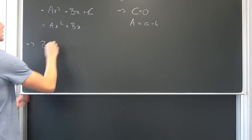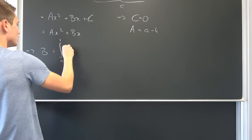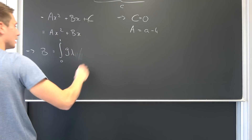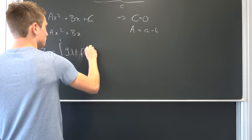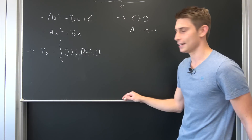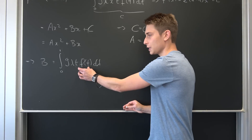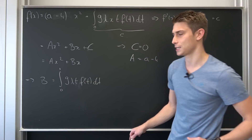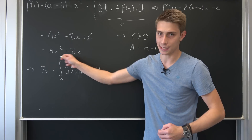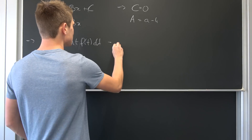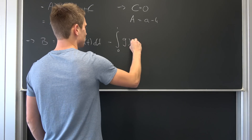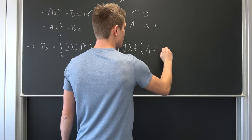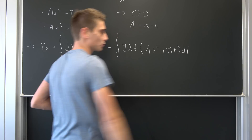Our b would be this integral right here without the x, so b is nothing but the integral from 0 to 1 of 9 lambda times t times f(t), integrated with respect to t. We've reduced f(t) to ax squared plus bx, so we plug that in with t instead of x. We can rewrite this as the integral from 0 to 1 of 9 lambda t times (a·t² + b·t), integrated with respect to t.